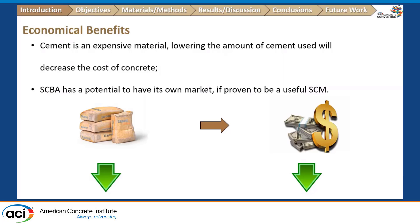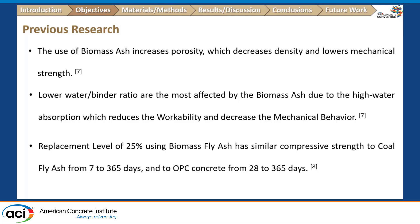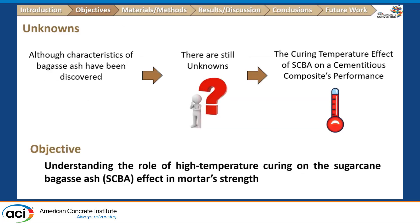In terms of objectives: we know that biomass ash currently causes a decrease in durability and lowers mechanical properties. While some characteristics of bagasse ash in cementitious composites are known, there are still unknowns such as the curing temperature effect. Therefore, this research aimed to understand the role of high-temperature curing on sugarcane bagasse ash and its effect on mortar compressive strength.